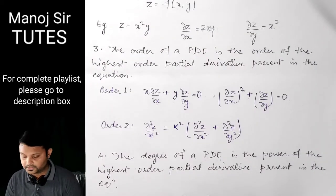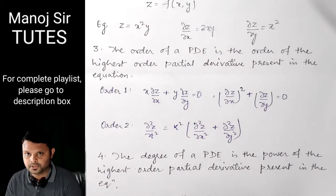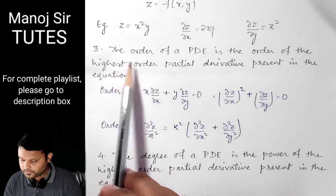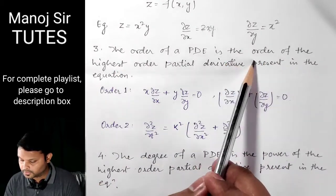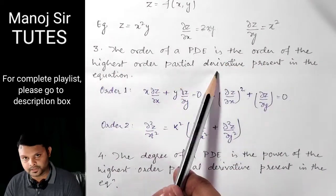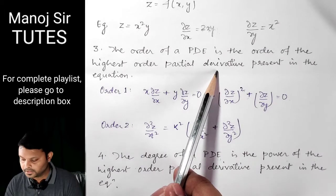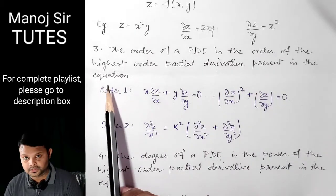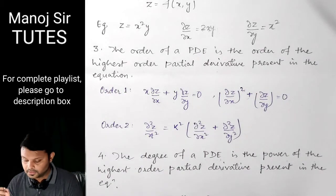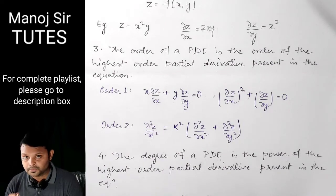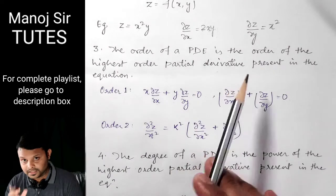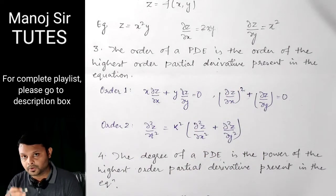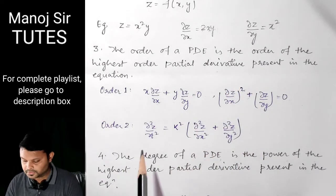Now we are coming to a very important point — the order of a partial differential equation. The order of a partial differential equation is the order of the highest order partial derivative present in the equation. We need to find the highest order partial derivative in the equation, and that will be known as the order of the PDE.